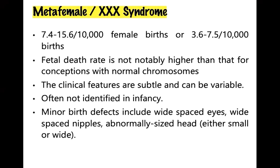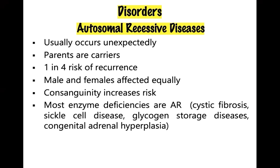There are some diseases classified as autosomal recessive, autosomal dominant, and X-linked recessive. In autosomal recessive diseases, the disease usually occurs unexpectedly, parents are carriers, there is a one-in-four risk of recurrence, and males and females are affected equally. Consanguinity increases risk. An example of an autosomal recessive disease is sickle cell disease.